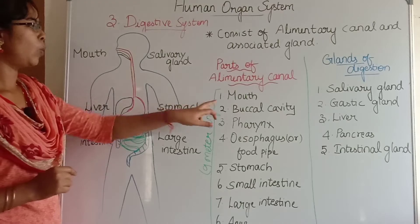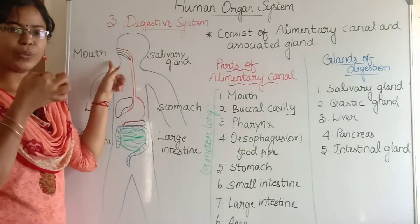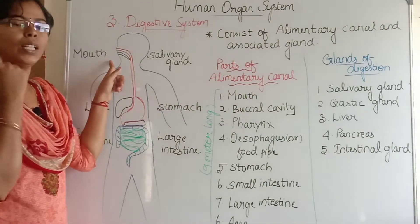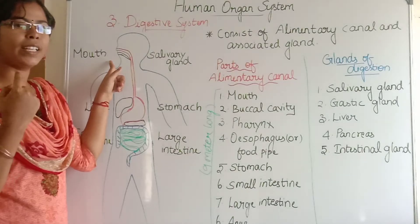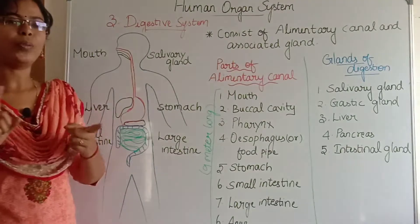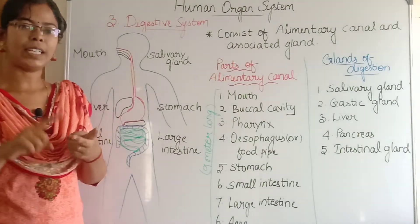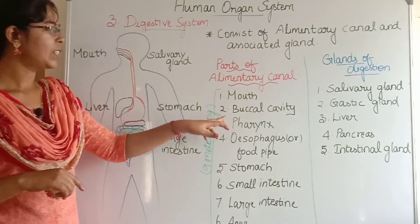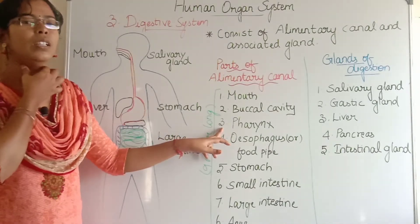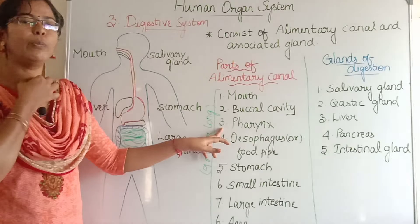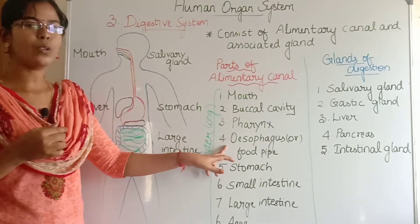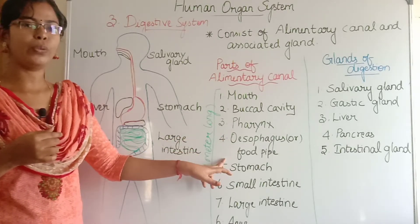So starting from the mouth — in the mouth we have the oral cavity, otherwise known as the buccal cavity. It consists of teeth and tongue. Then after the buccal cavity comes the pharynx, and then the food pipe, which is the esophagus.